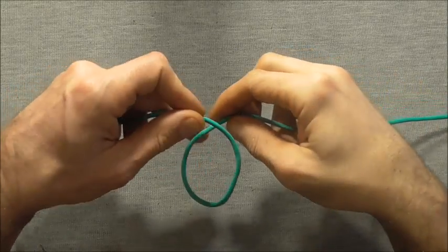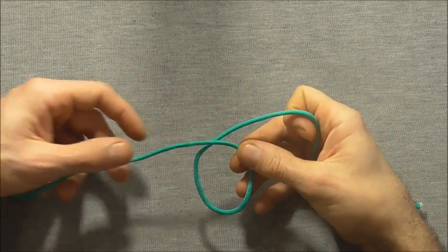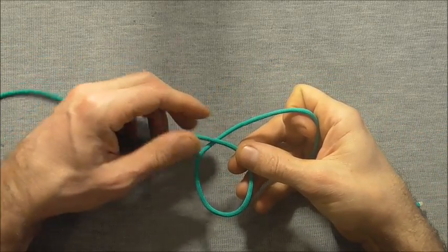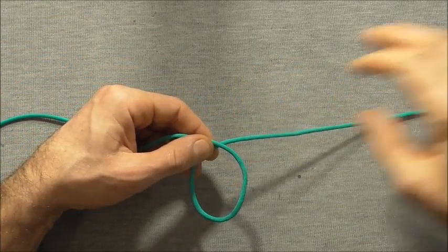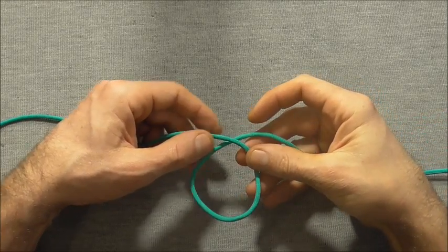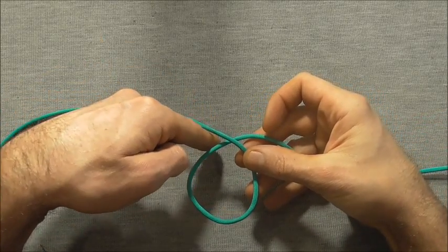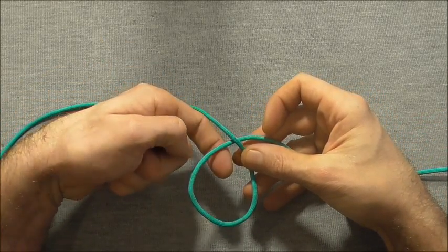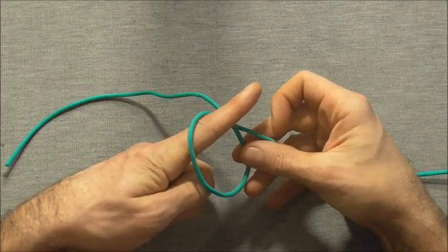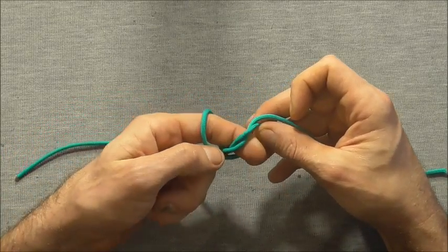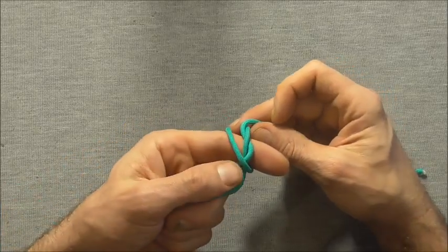To tie this one I'm just going to form a loop with the left side above this right strand here and I'm going to place my finger in this gap, curl it up into that loop over the crossing and then curl it up into the loop one more time.